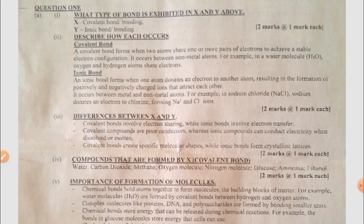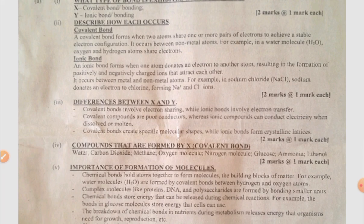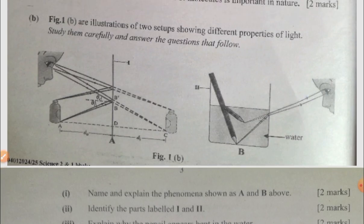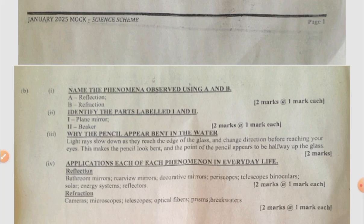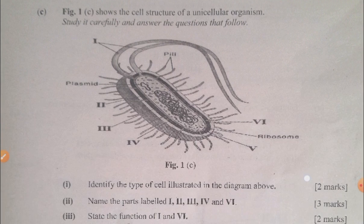Here are the answers from i to v. Moving on to question 1b, there are two phenomena being illustrated here — A and B — which you need to label, identify, and explain why the pencil appears bent in the water, plus two real-life applications of A and B. The answer: A has to do with reflection, B has to do with refraction.